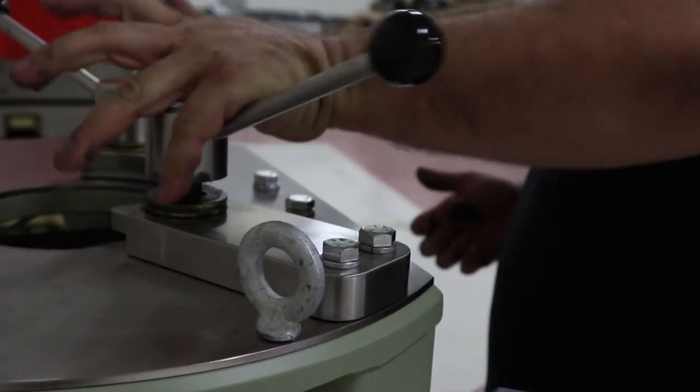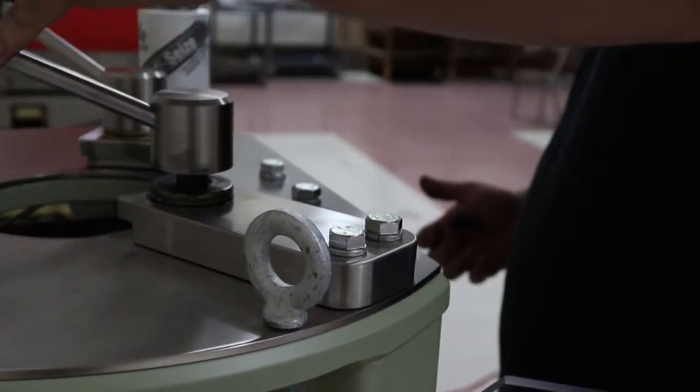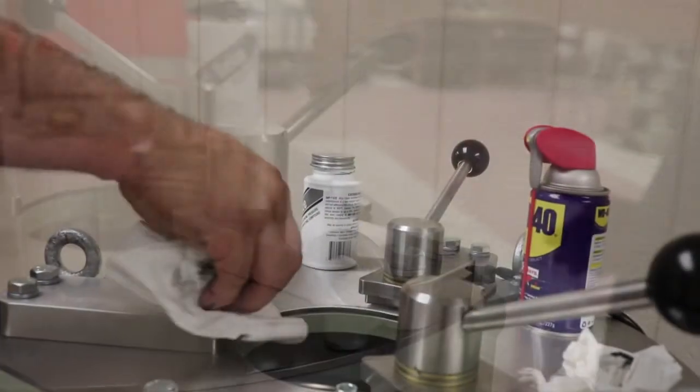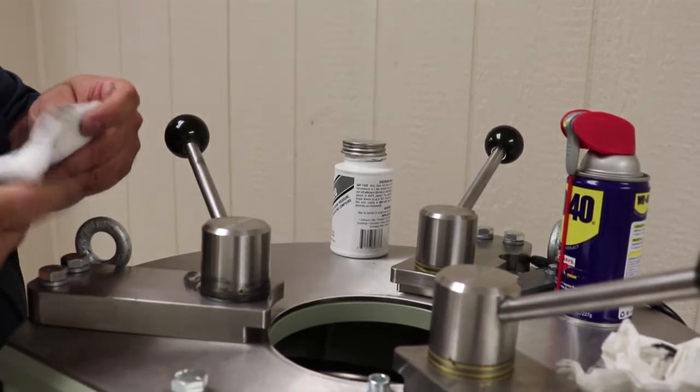Lubricate as necessary when the handles get hard to loosen. Clean any excess anti-seize remaining on the mold top clamp handles.